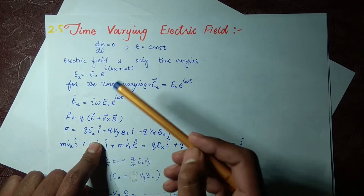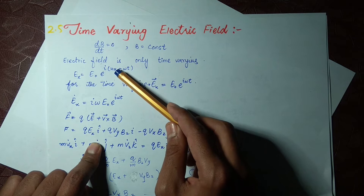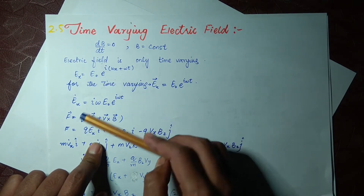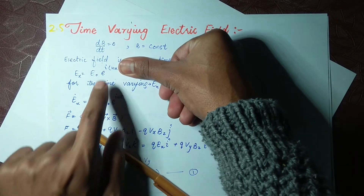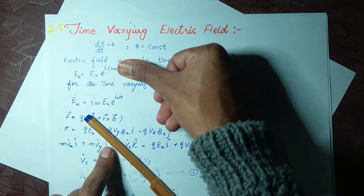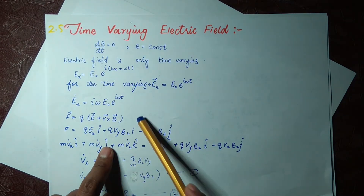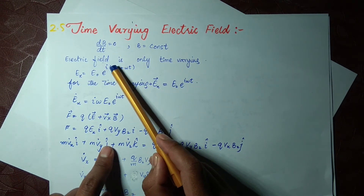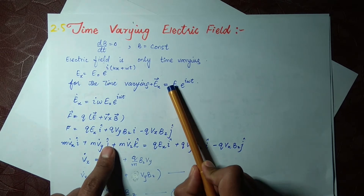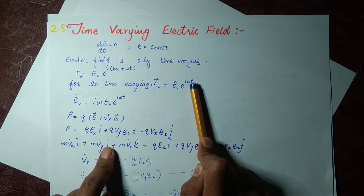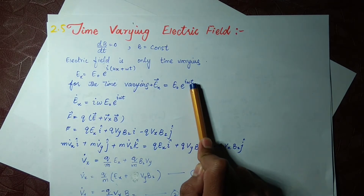Previously when we discussed position variation, the term ωt was zero and E = e^(ikx). But this time, because we are talking about time variation, the spatial term kx goes to zero and our wave function becomes E(x) = E₀ e^(iωt). This is the propagating wave function for the electric field we will use in the derivation.